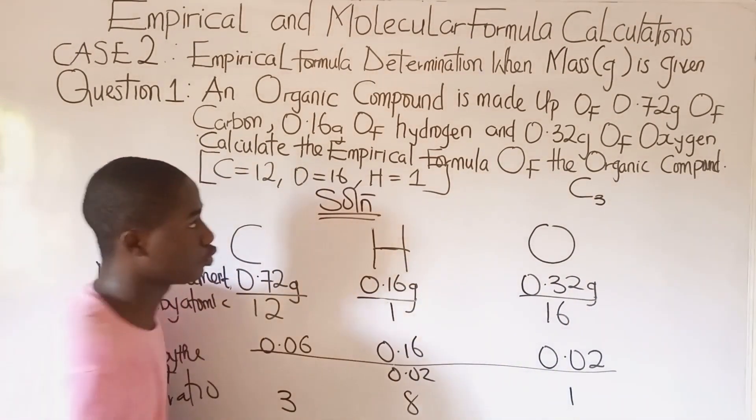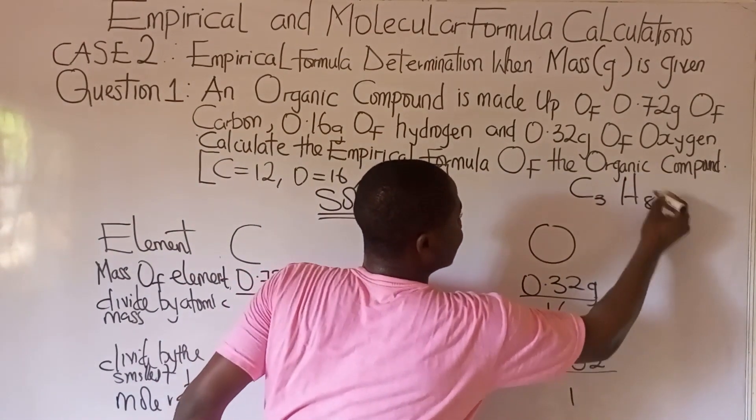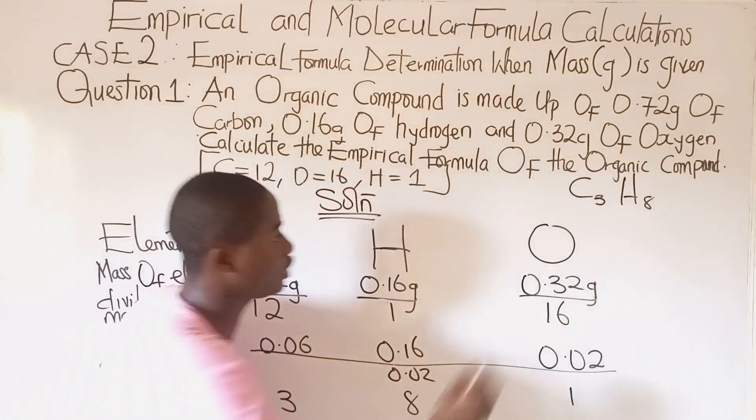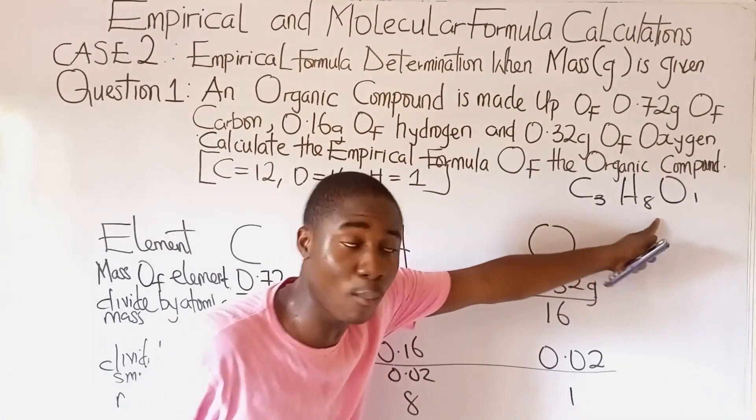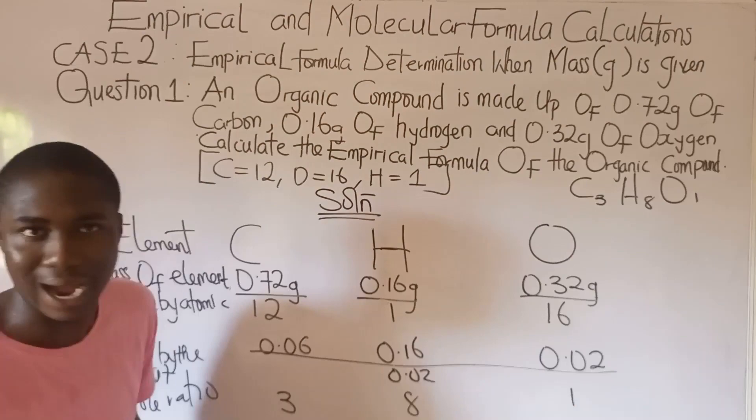While for hydrogen, we had 8. And for oxygen, we had 1. So this is the empirical formula of this organic compound.